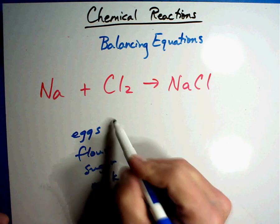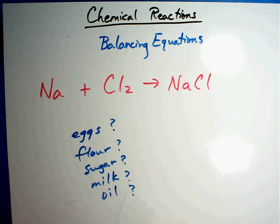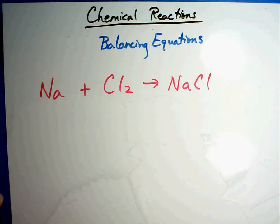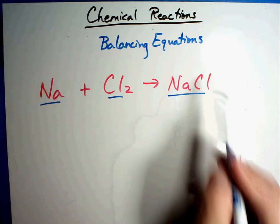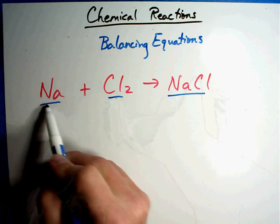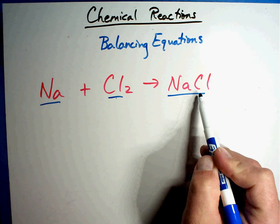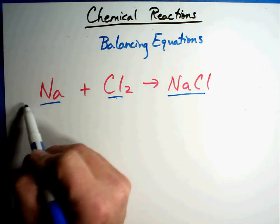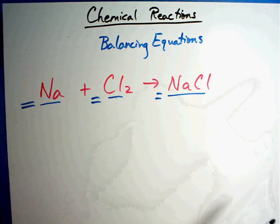The recipe tells me how much of this, how much of this, how much of this — I can't just put it all together and guess. That's exactly what happens here. We have to have the recipe. Right now I know the ingredients and what I'm going to make. These are the ingredients, they're going to react, this is the product. The question is: how much of each do I need? That is what we're trying to figure out.